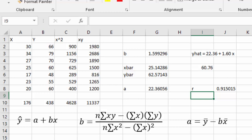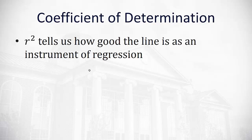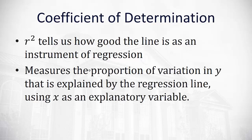But how good is that line then to estimate values such as the 24 for x that we use to estimate the 60.76? This brings us to the coefficient of determination. The coefficient of determination is the statistic r squared which tells us how good the line is as an instrument of regression. r squared measures the proportion of variation in the independent variable y that's explained by the regression line using x as an explanatory or independent variable.